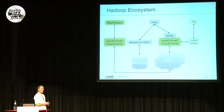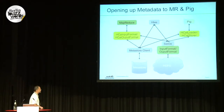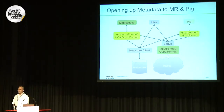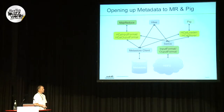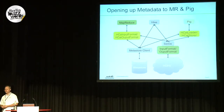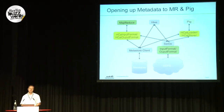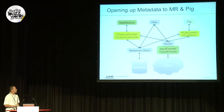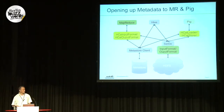These are the problems that hCatalog is written to address — this is exactly the use case it's going after. What hCatalog does is open up the Hive Metastore to other tools. Right now that means MapReduce and Pig. It introduces an HCat input and output format and an HCat load and store function, so that from Pig and MapReduce you can now benefit from this metadata. One of the strengths of Pig and MapReduce is you don't have to have metadata, but when it's there you'd like to make use of it.